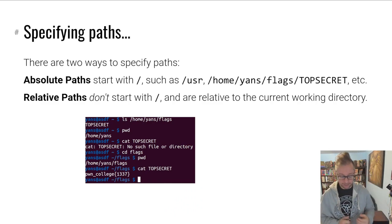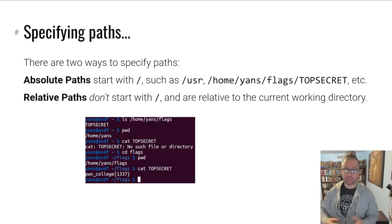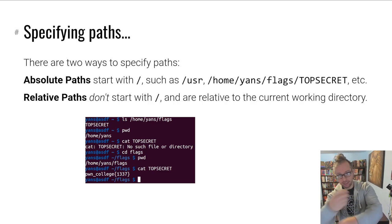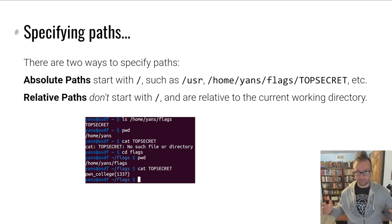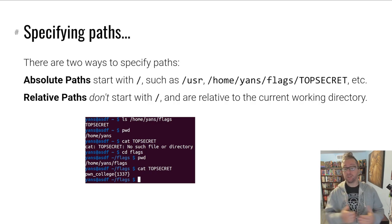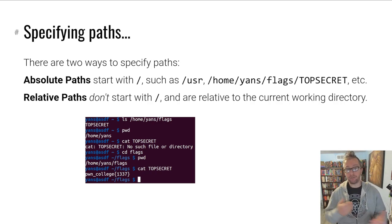Let's talk about paths. In that previous example I did cat /home/yans/flags, but that's very tedious if you always have to start from slash. Directories get pretty deep, especially in a complex system — if you're doing software development with modules and submodules, it's a nightmare to always type what is called an absolute path: a path that starts with slash and refers to the very beginning of the file system tree. That's why we invented relative paths. Relative paths don't start with a slash and are relative to the current working directory.